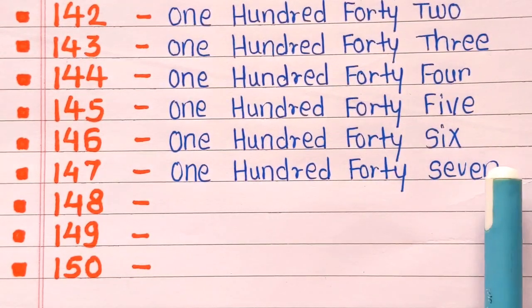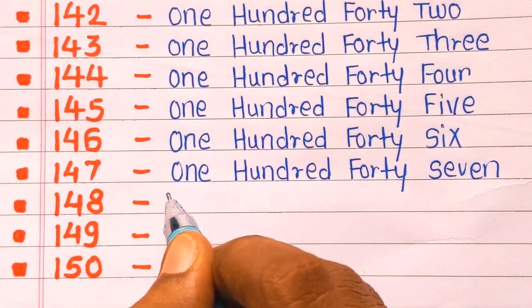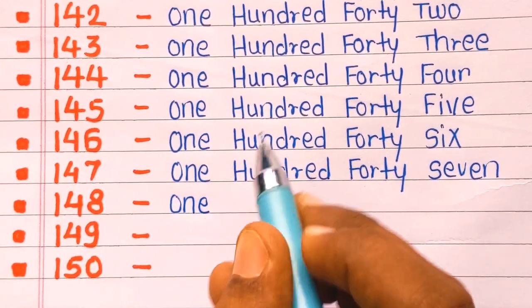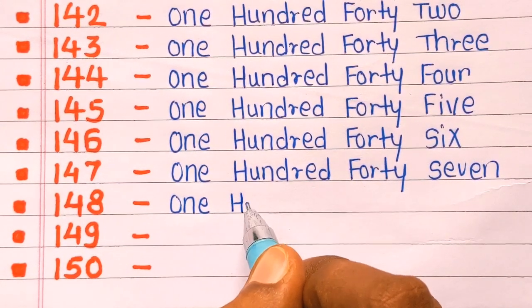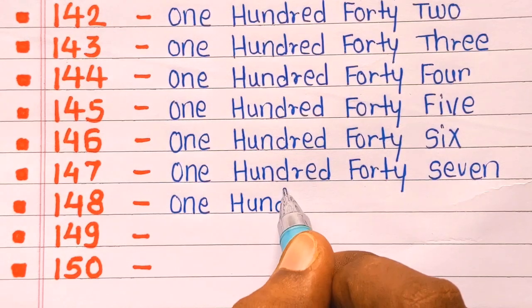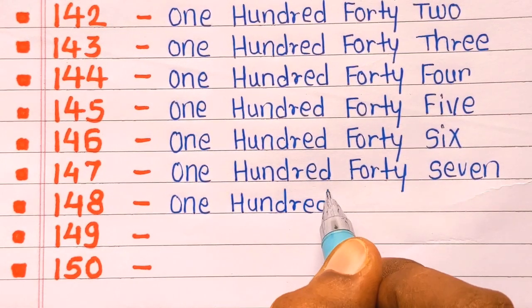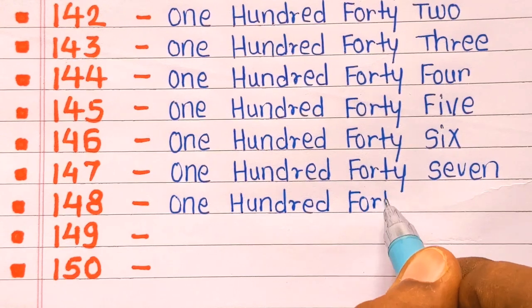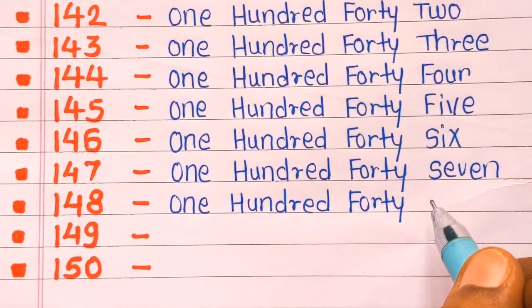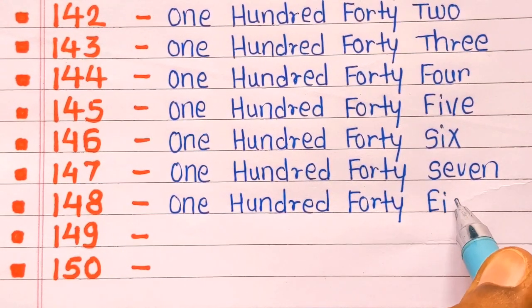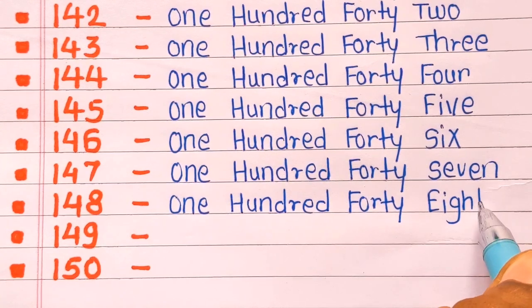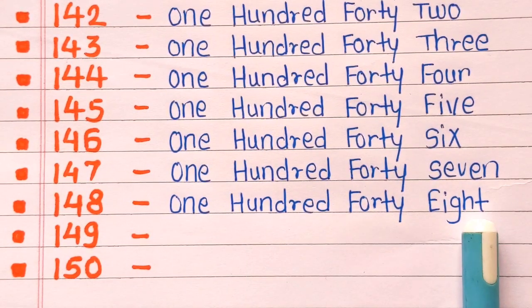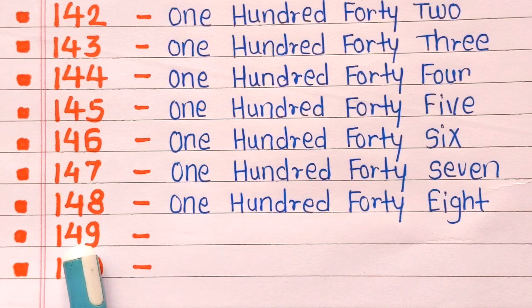Next is 148. 148 is one hundred forty eight. O-N-E, one. H-U-N-D-R-E-D, hundred. F-O-R-T-Y, forty. E-I-G-H-T, eight. 148.